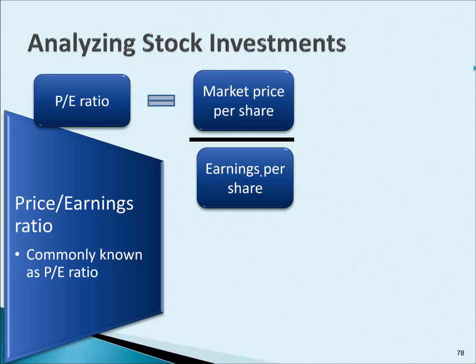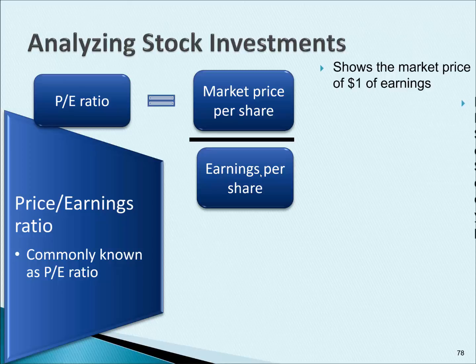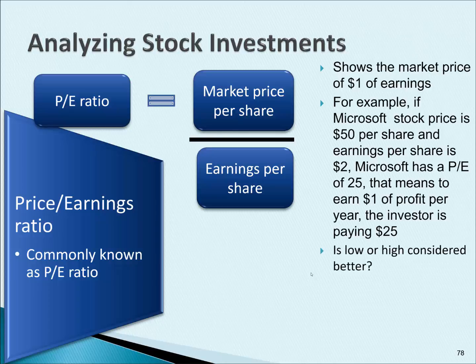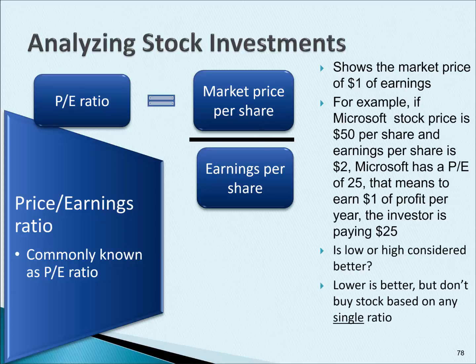What the PE ratio is doing is showing the market price of $1 of earnings. Let's do an example. Say Microsoft has a $50 per share stock price and their EPS is $2. The PE is $50 divided by $2, which gives us a PE of 25. That means for every dollar of profit per year, the investor is paying $25. So is lower better or is higher better? Lower is better, because you want to pay a low price relative to the earnings on the bottom.